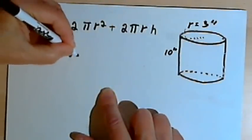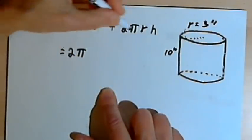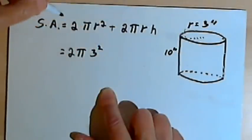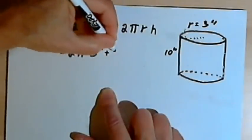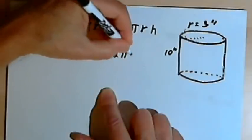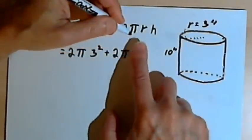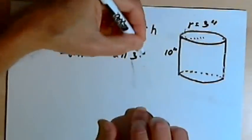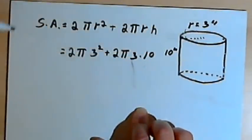So that's going to be 2 times pi times the radius squared, where the radius is 3, so that's 3 squared, plus 2 times pi times the radius, which once again is 3, times the height, which is 10.